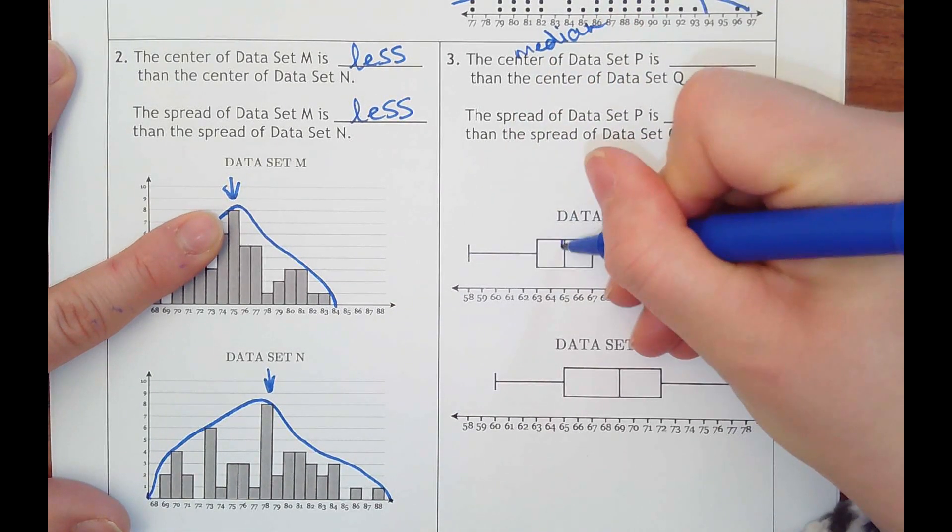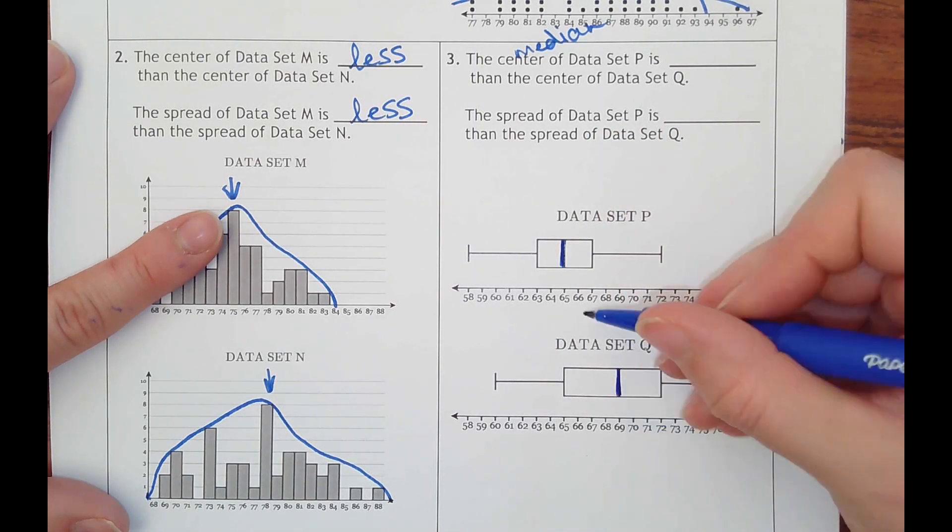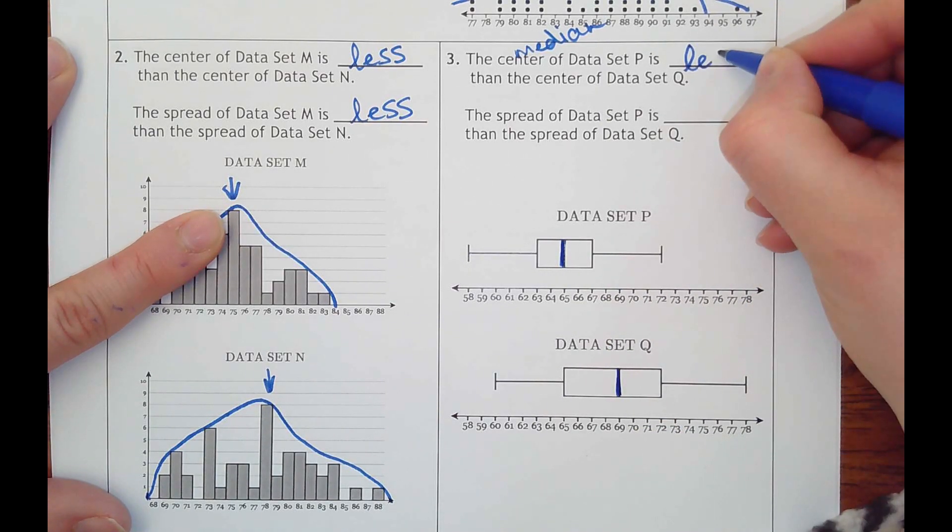And so the median in data set P is here, whereas in Q, it's here at 69. So 65, 69, again, on the center at P is less than Q.